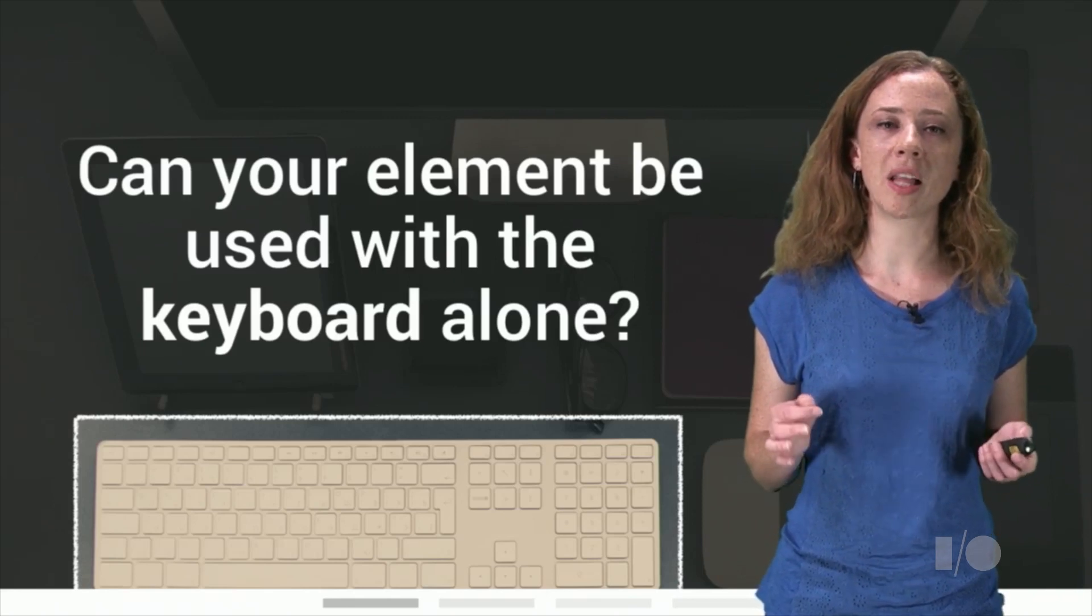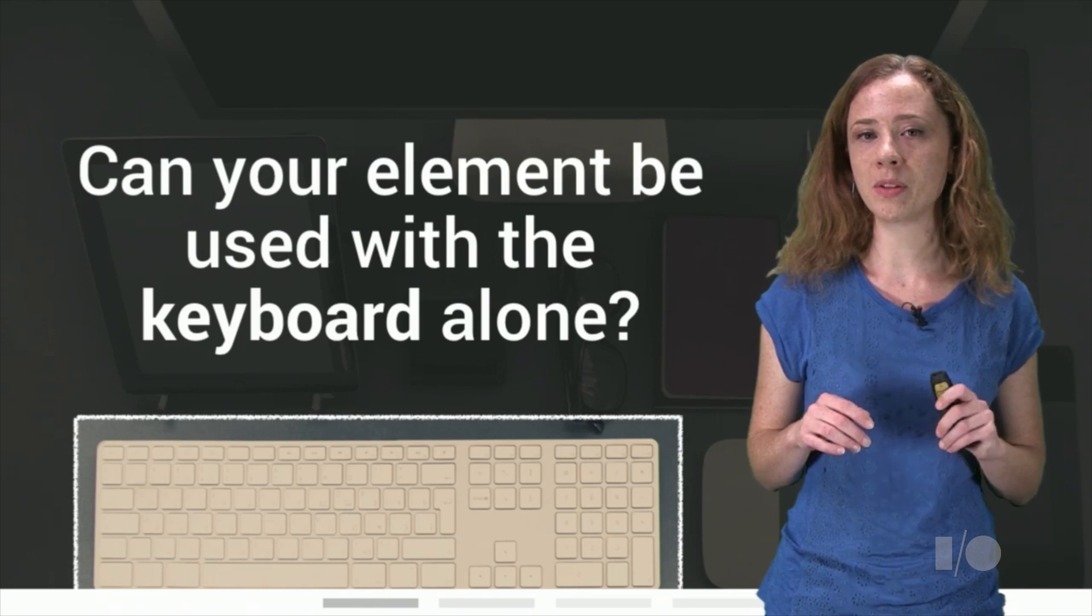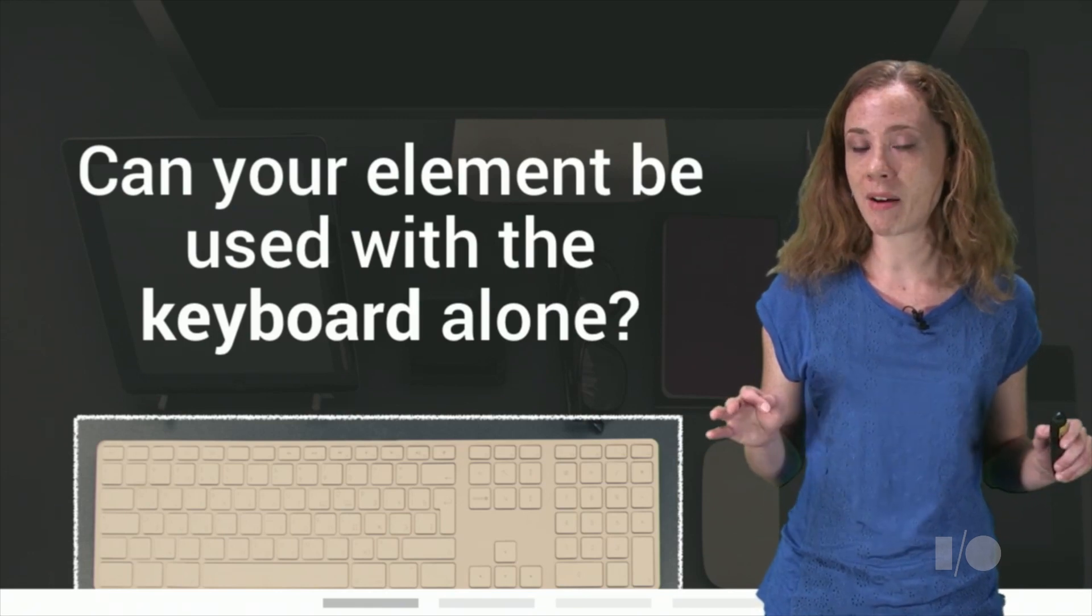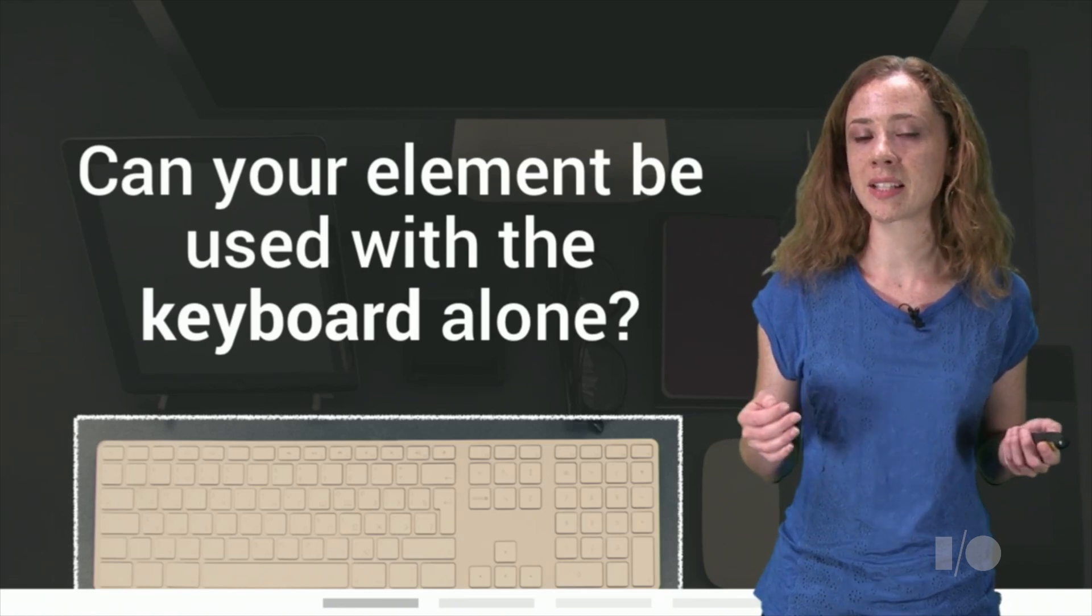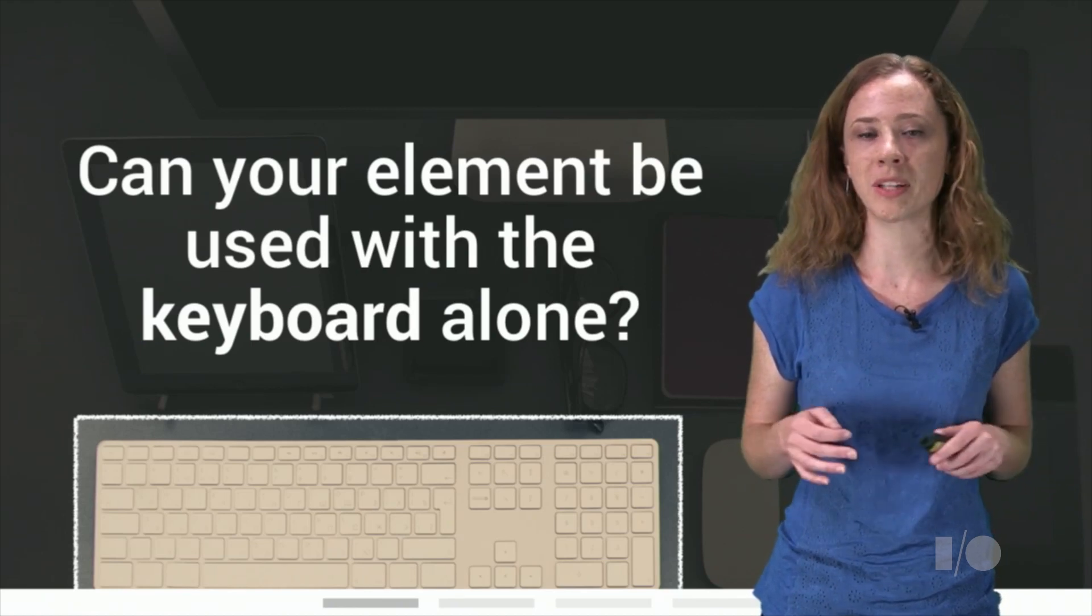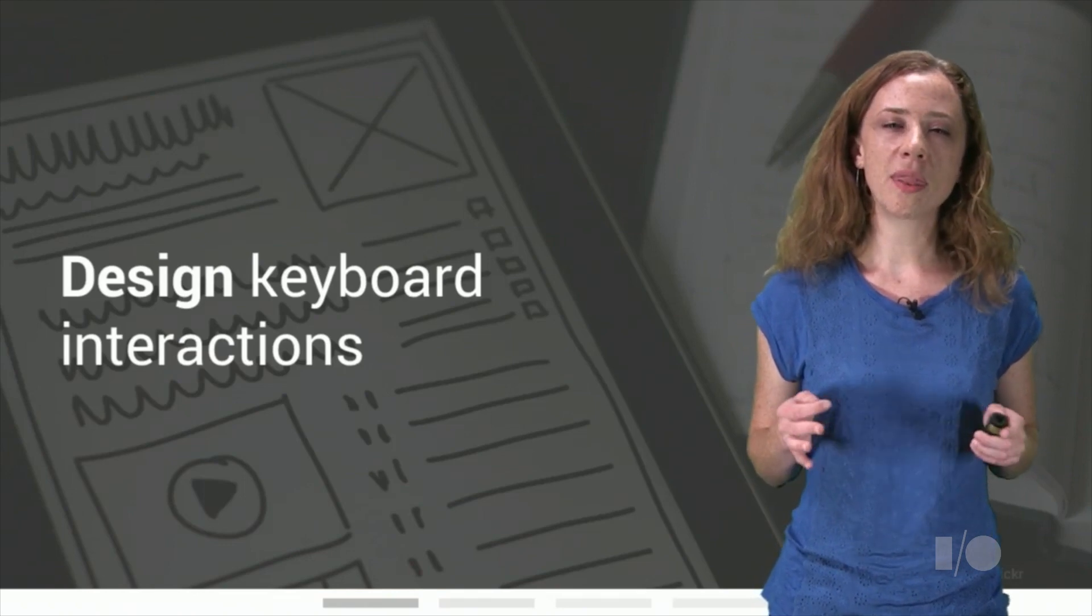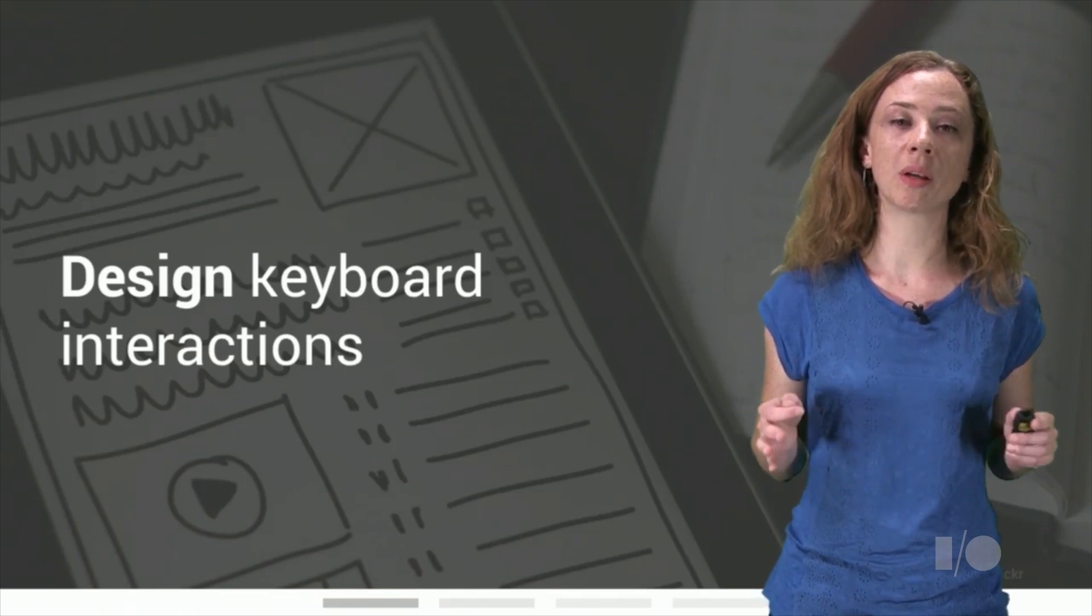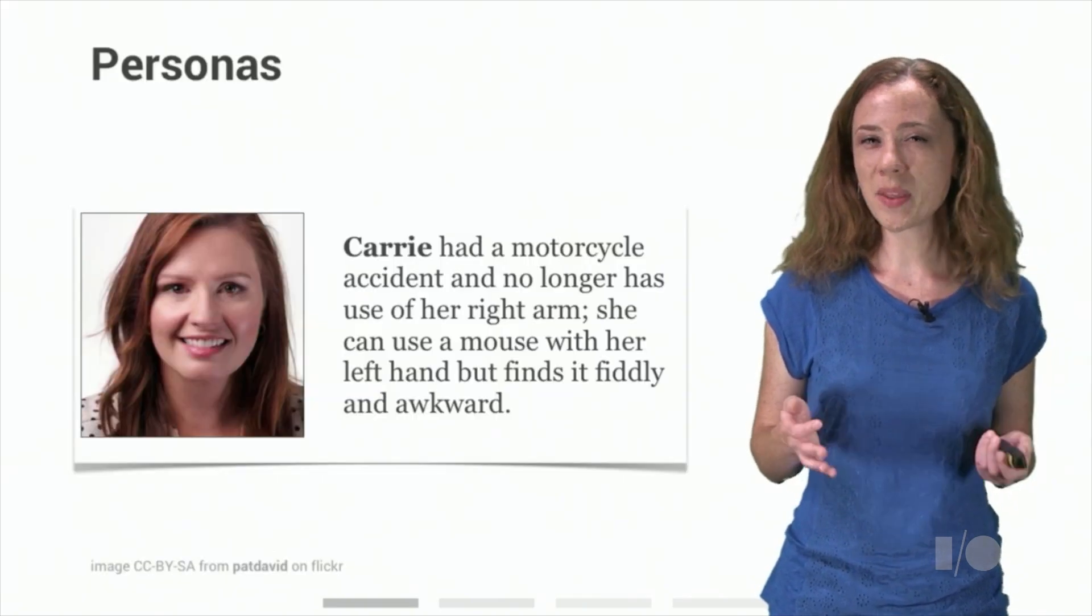The first thing we want to look at is whether our element can be used with the keyboard alone. This is a first step ensuring it can be used by users of assistive technology on all platforms, but also important for users with motor impairments or injuries, or any desktop users who can't or won't use a mouse right now. During your user experience design, think about how you would use your element with the keyboard alone and figure out a consistent set of keyboard interactions.